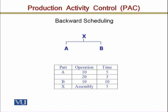Part B has only one operation, which is operation 10. This operation 10 is required to produce the 50 units, and it will take 10 days.